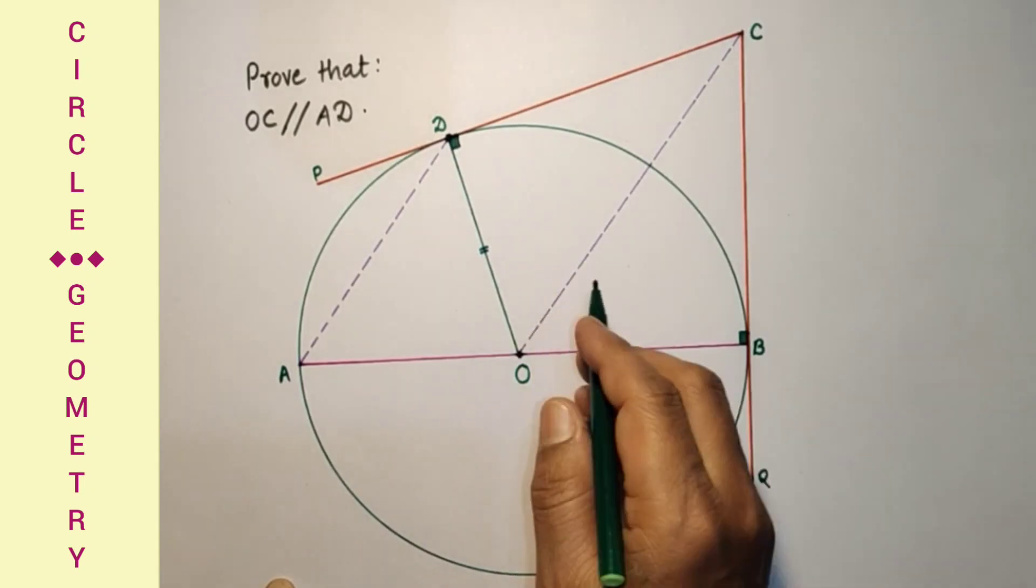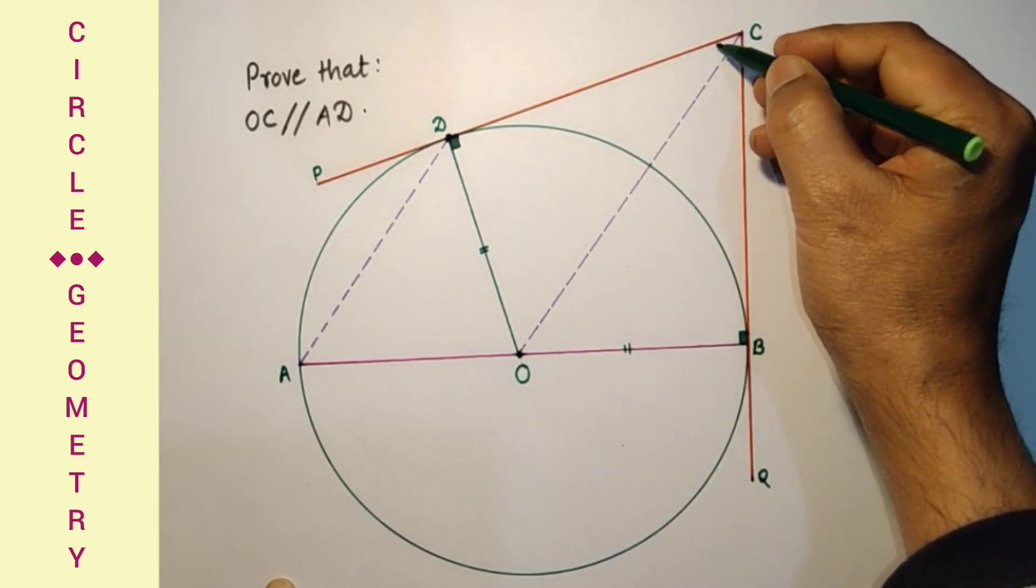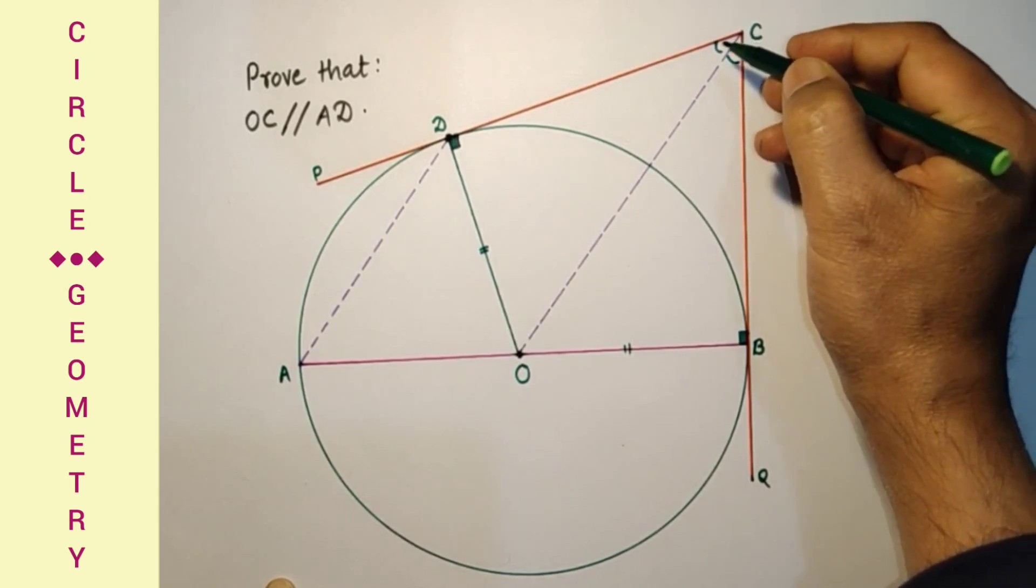Since these two triangles are congruent, these two angles will be equal. Let us suppose this is theta.